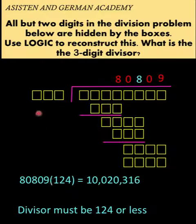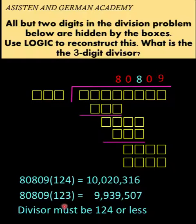So let's try 123. This quotient times 123 gives us a seven-digit number. But clearly, this number must be an eight-digit number.